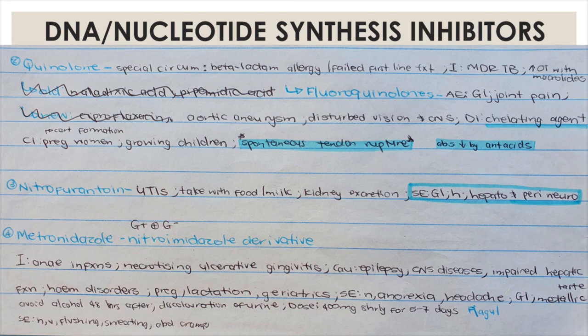Nitrofurantoin is given for UTIs. Take it with food or milk to reduce GI effects. It is excreted by the kidneys so caution is needed in patients with kidney issues. Side effects include GI effects, headaches, hepatotoxicity, and peripheral neuropathy.